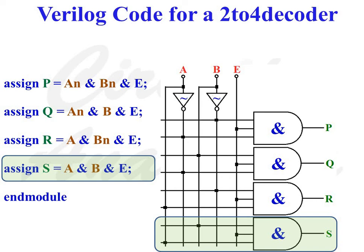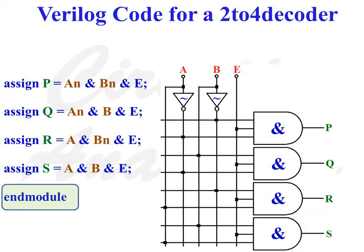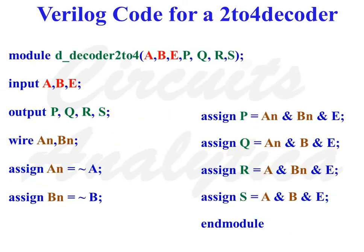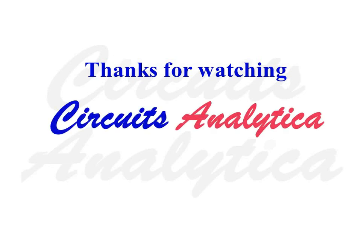The keyword assign specifies that the style of modeling is dataflow style of modeling. We can justify that the style of modeling is dataflow style by the presence of the keyword assign. The line endmodule denotes that all assignment statements inside the body of the module are completed. This is the complete Verilog code for a 2-to-4 decoder. Thanks for watching Circuits Analytica. Enjoy learning.